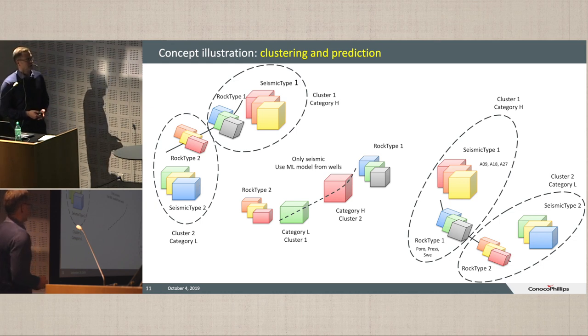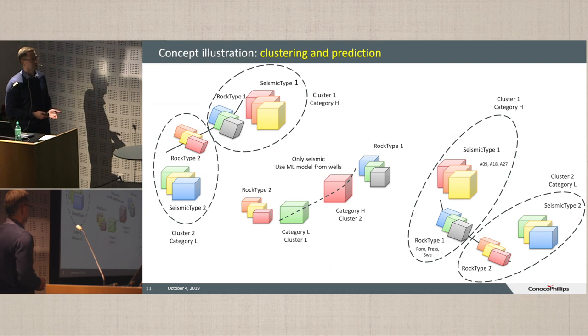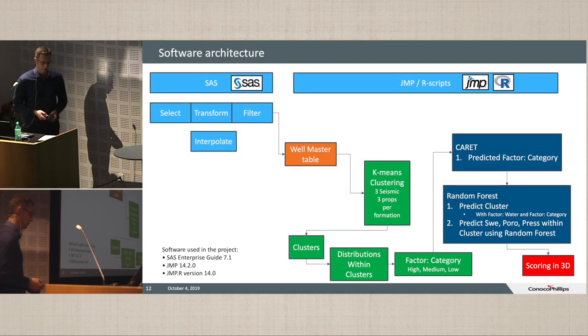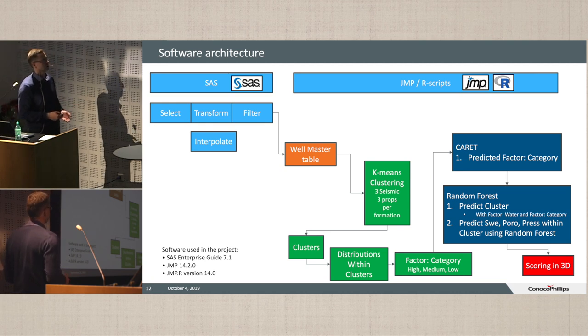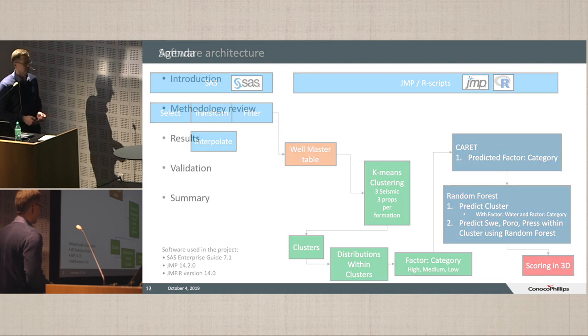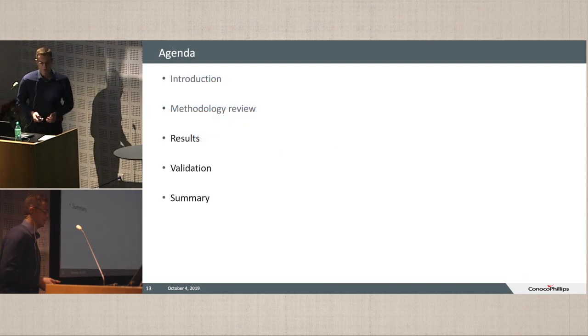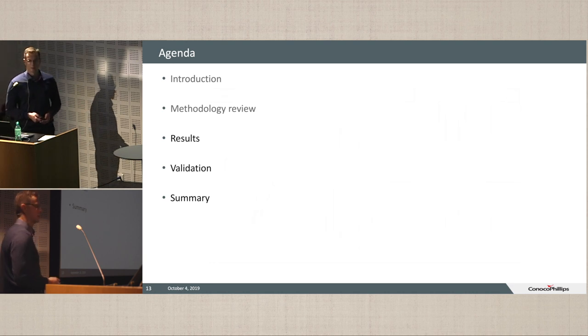So the software implementation is here. We start with data select, transform, filter, interpolate, get a huge well-master table. Then we do initial clustering of seismic and reservoir properties. Define clusters, distributions within the clusters, get factors, categories. Then we predict categories using the different machine learning methods. And we use caret package in R to optimize the parameters. Then within the clusters, we predict the saturations and clusters within categories using random forest. And then we get the model that we score in 3D for seismic. So that's the agenda. I've been through the introduction and methodology review. Now let's see the results of the workflow.